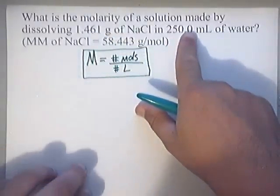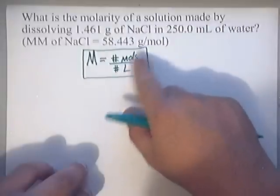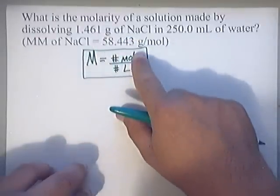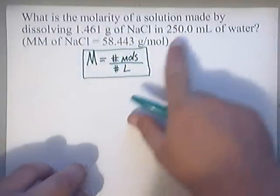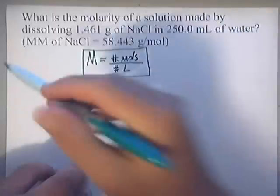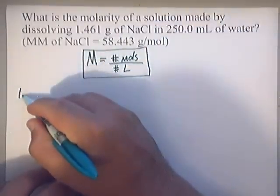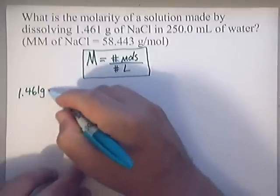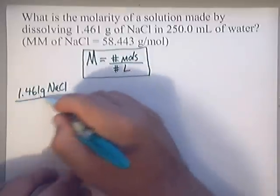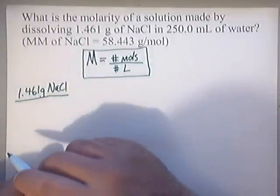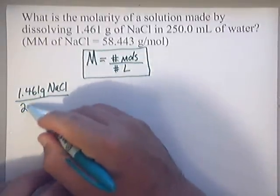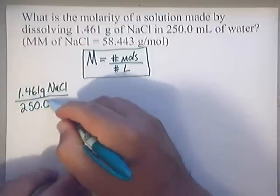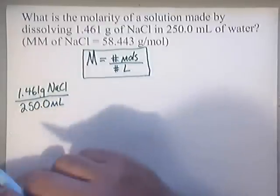What we're going to do is set this up just like the molarity equation. Where it says moles, we're going to put our grams in its place, and where it says liters, we're going to put our milliliters. That gives us 1.461 grams of NaCl over 250.0 milliliters of water.